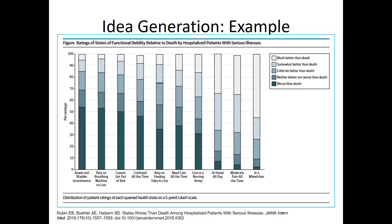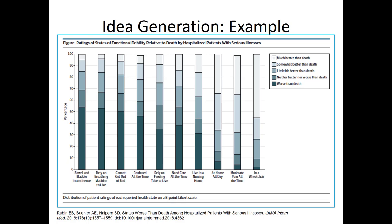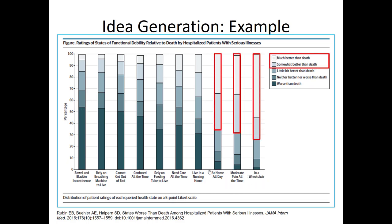Consider this study from the medical field. In this study, 180 patients who were 60 or over and had long-term medical issues were asked to evaluate the health stakes of specific physical or cognitive disabilities. Specifically, for different hypothetical cognitive or physical disabilities, respondents were asked to evaluate whether they thought having that issue would be better or worse than death. The results are interesting: over 50% of respondents said that bowel and bladder incontinence would be worse than death, whereas being bound in a wheelchair, having moderate pain all the time, or having to stay at home all day was typically rated much or somewhat better than death.